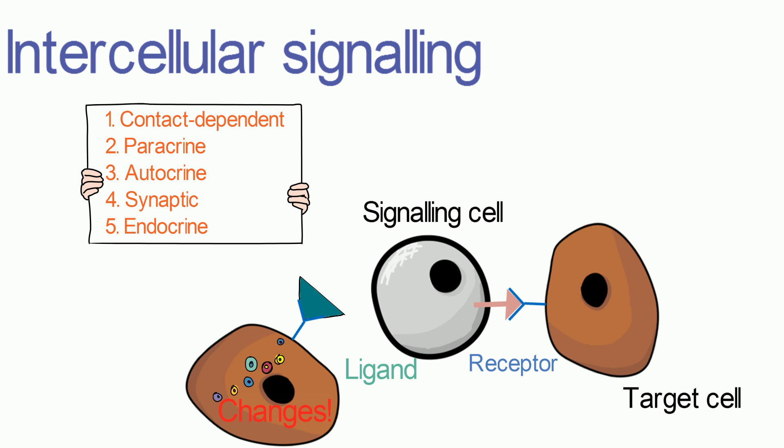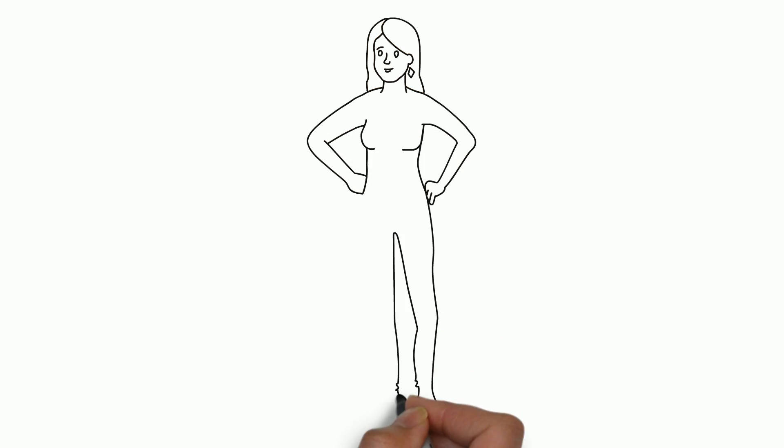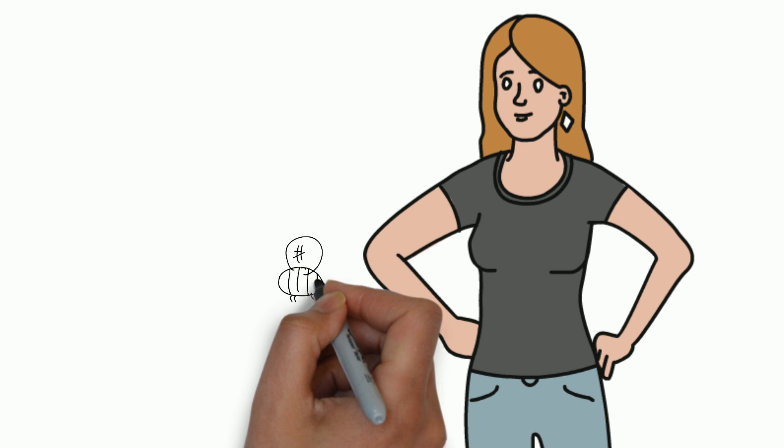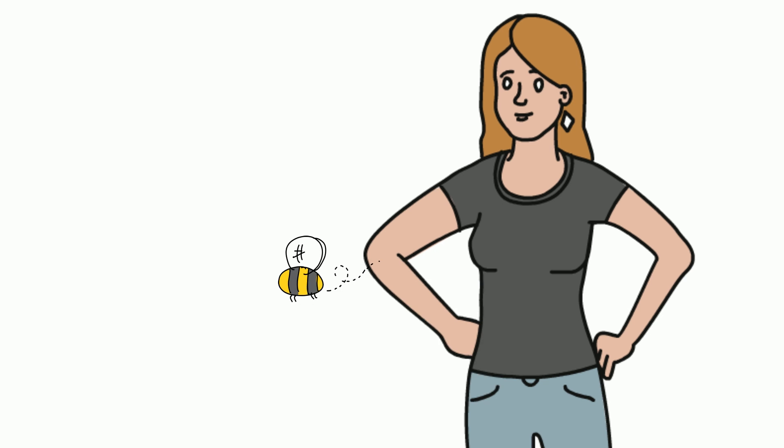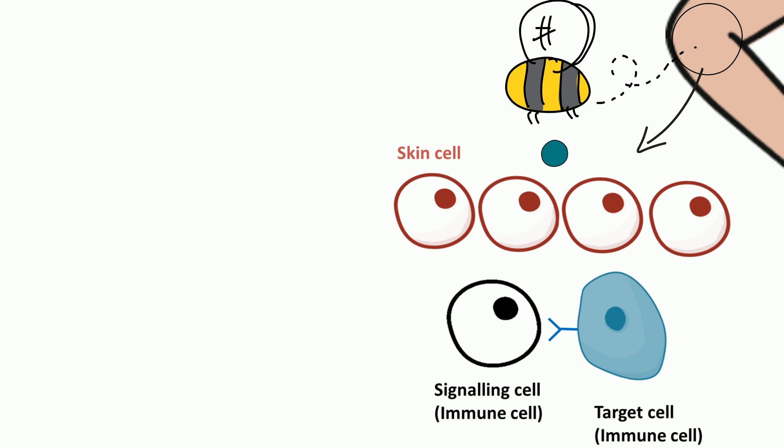Let's understand these types of intercellular signaling using examples seen in day-to-day scenarios. When taking a walk in the garden, the lady was stung by a bee. Proteins found in the bee venom are engulfed by immune cells and presented as antigens bound on the surface of the cell membrane.